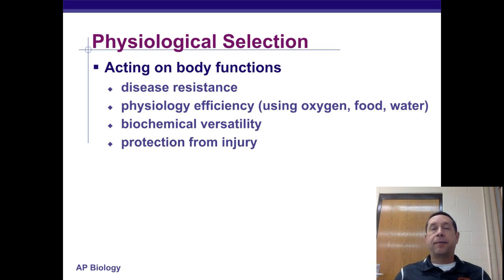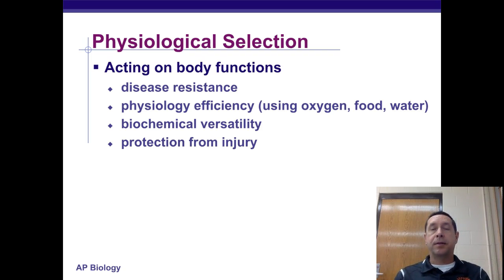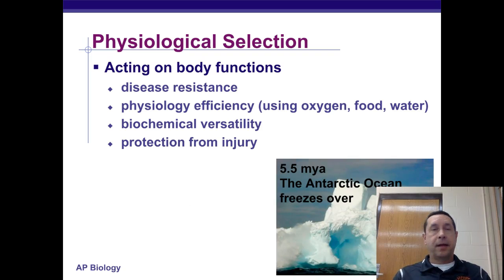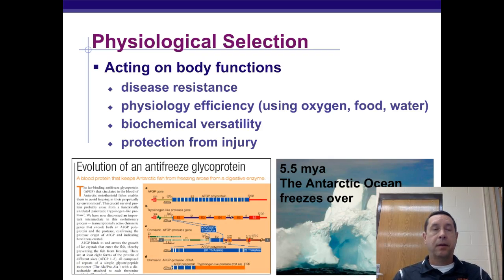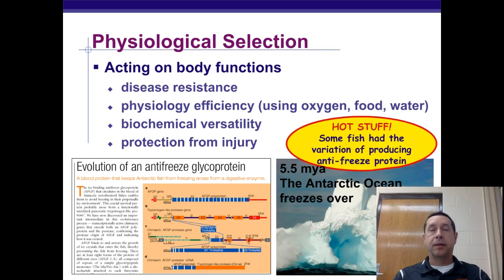Physiological selection acts on body function: becoming more resistant to disease, being able to use oxygen, food, and water more efficiently, biochemical versatility — using different types of energy sources or protecting oneself from injury. An example: 5.5 million years ago, when the Antarctic Ocean froze over, certain fish produced an antifreeze-like glycoprotein that allowed them to survive in very cold temperatures.